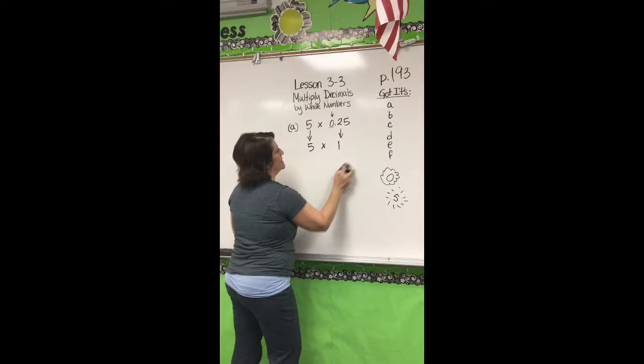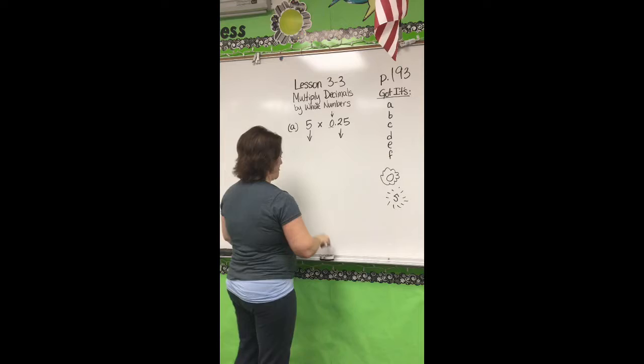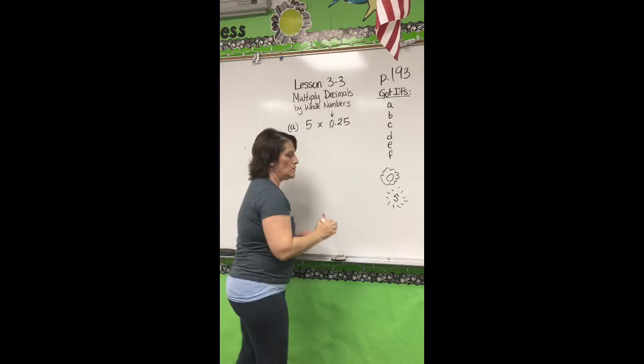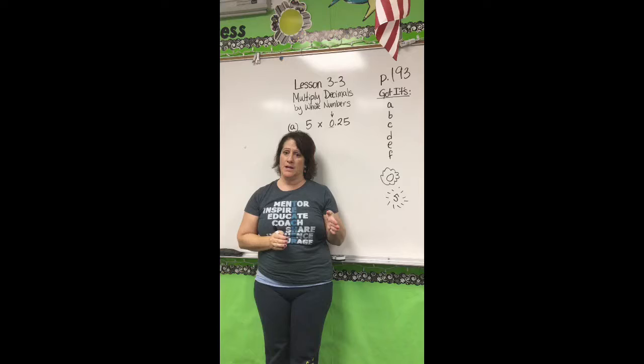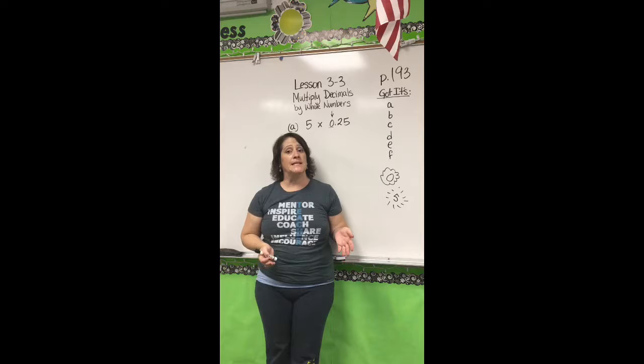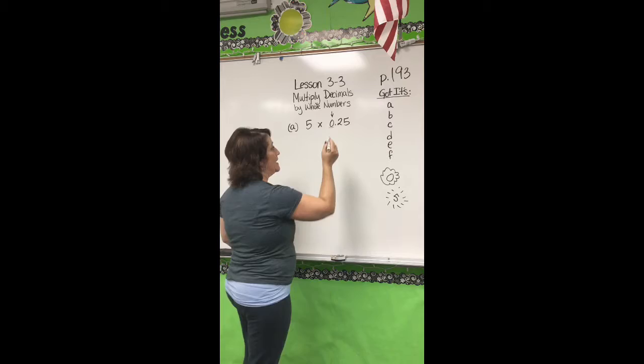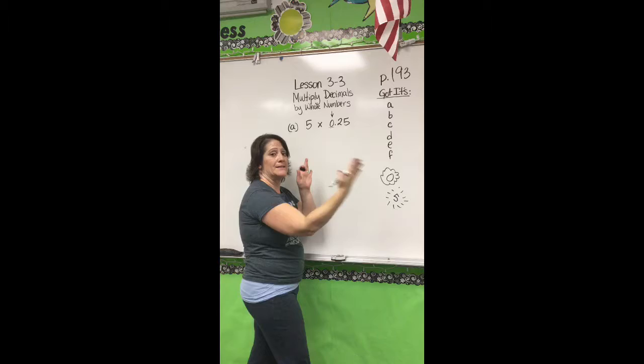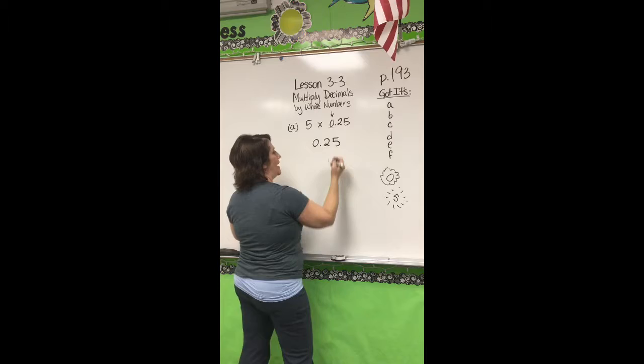Now I'm going to do the actual calculation. Remember when we are multiplying, decimals don't matter until the answer. You do not need to line decimals up like you do with addition and subtraction. So when you do multiplication, don't worry about those decimals yet. I would recommend stacking the longest number on the top — it doesn't mean it's the largest number, it's just the widest or longest number. So set your problem up like this, put your 5 down all the way to the right, and then just do your multiplication.